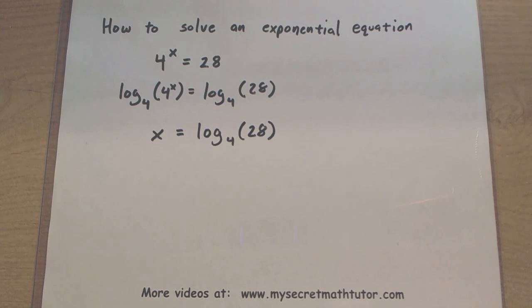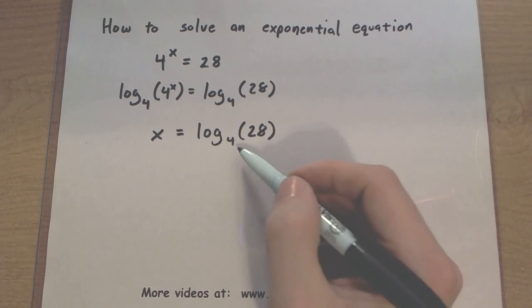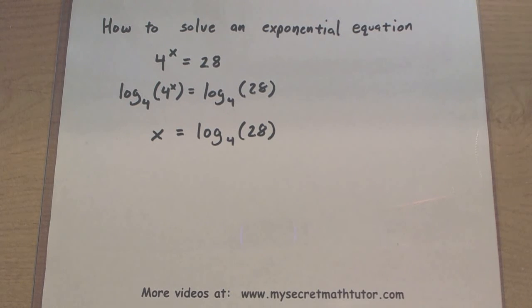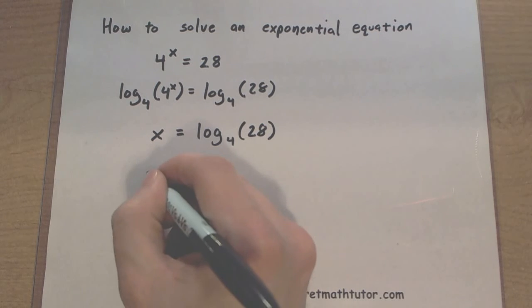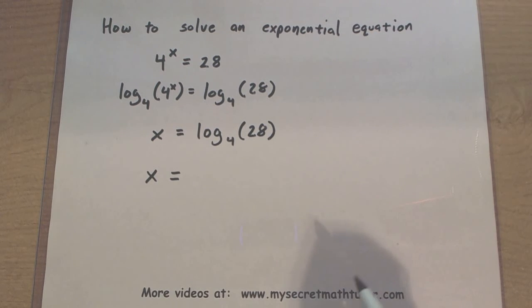Now sometimes you want to take this a little bit further, and actually get a decimal approximation for the answer. Well, we need to figure out what to do with this then. If you look on most standard calculators, they don't have a base 4. Instead they have some things such as log base 10, or a natural log. So let's go ahead and change this using a change of base formula.